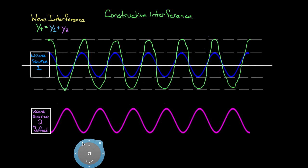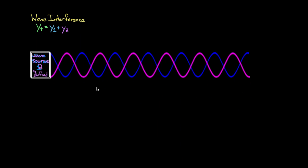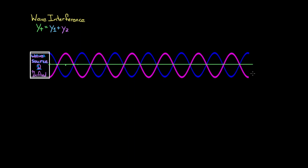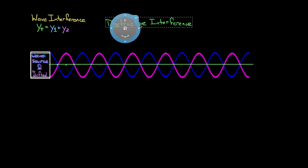So what happens if we overlap these two? I've got one and negative one, one and negative one — zero. Zero and zero — zero. Negative one and one — zero. No matter where I'm at, these two waves are gonna add up to zero. They add up to nothing. So we call this destructive interference, because these two waves essentially destroyed each other. Two waves add up to nothing — how can that be the case? Are there any applications of this?